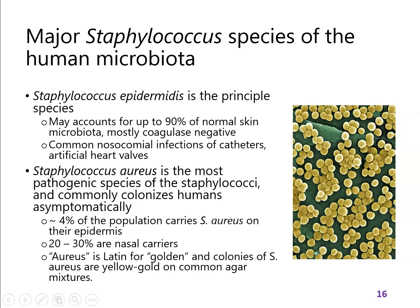Staphylococcus aureus can be more invasive and so we hear more about it. It will colonize a lot of people asymptomatically - a small portion have it on their skin, but many more have it in their nasal cavities. Aureus means golden in Latin, and on certain types of agar media the colonies are golden, which is what it is named for. We'll come back to this when we look at the diseases. For now we are mostly thinking about the normal microbiota, and in the case of staphylococcus, the normal microbiota has significant capacity to become pathogenic.